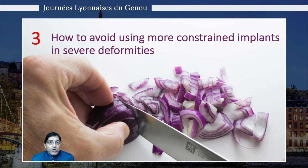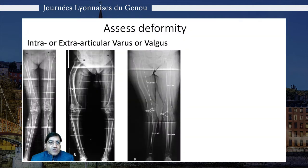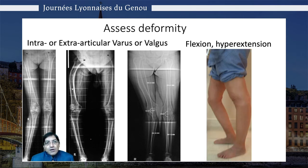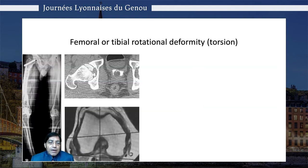So how can we avoid using more constrained implants? First, let's assess the deformity and see whether it's varus or valgus, intra- or extra-articular deformity, whether there's flexion or hyperextension, and whether there's femoral or tibial torsional deformity.